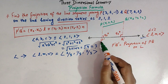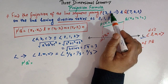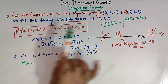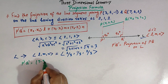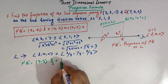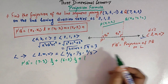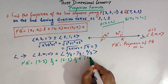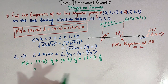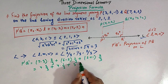Now it is easy to find the length of the projection. P prime Q prime = (x2 − x1)·L + (y2 − y1)·M + (z2 − z1)·N. Here x1, y1, z1 is (3, 2, −1) and x2, y2, z2 is (7, 6, 2). Substituting: (7 − 3)·(2/3) + (6 − 2)·(1/3) + (2 − (−1))·(2/3), which gives 4·(2/3) + 4·(1/3) + 3·(2/3).